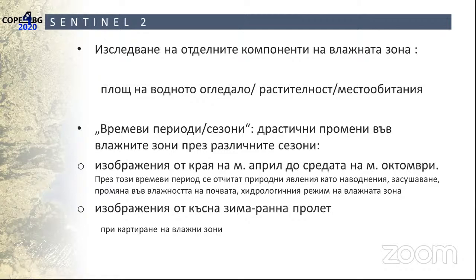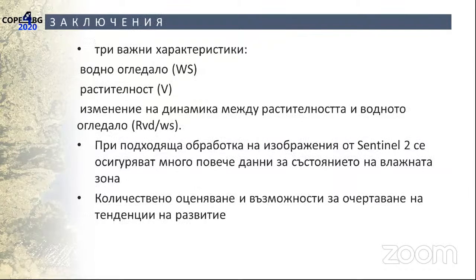Key considerations for wetland monitoring using Sentinel-2 imagery: time periods selected must correspond to specific seasons to generate the necessary data for comparison and change detection. Images from late April through mid-October are most important as they capture various natural phenomena and establish hydrological regime dynamics. Late winter and early spring images are valuable for wetland mapping. The three key characteristics to assess are: open water surface, vegetation, and the dynamics of change between vegetation and water surface. Appropriate image processing of Sentinel-2 imagery provides far more detail about wetland condition.